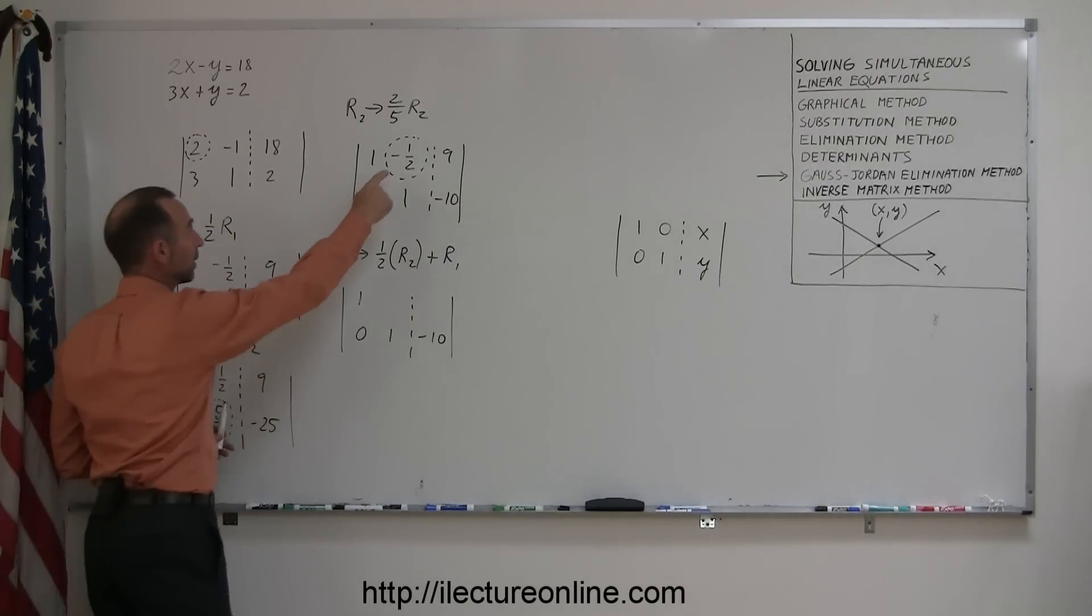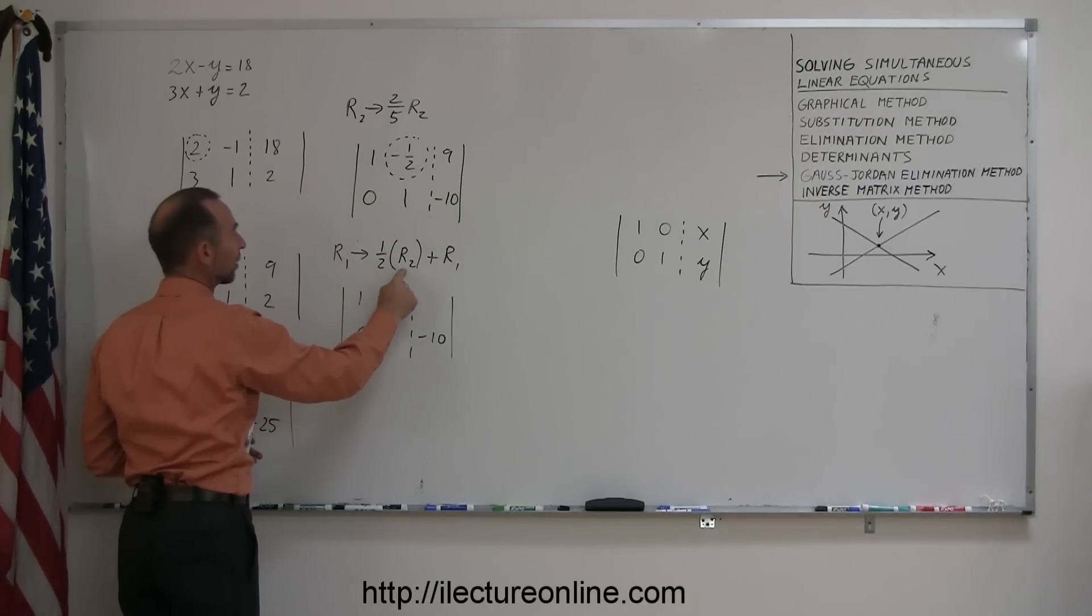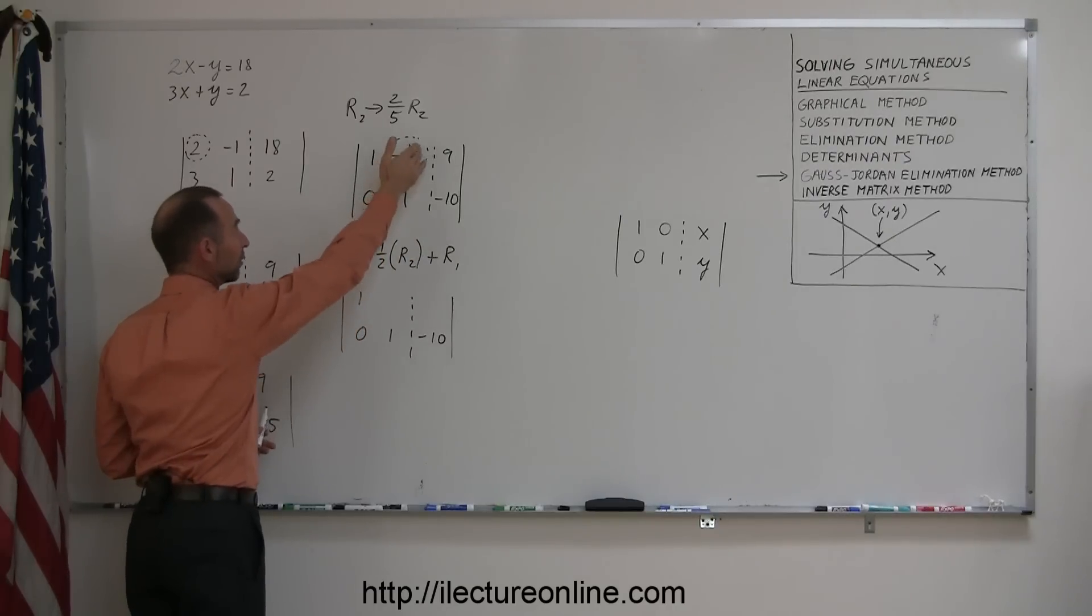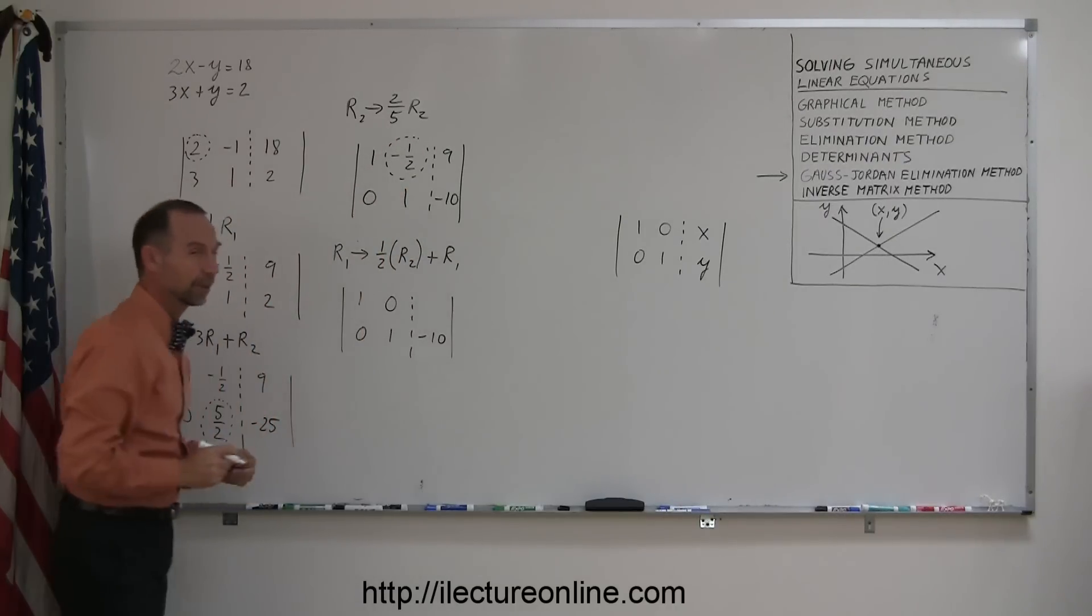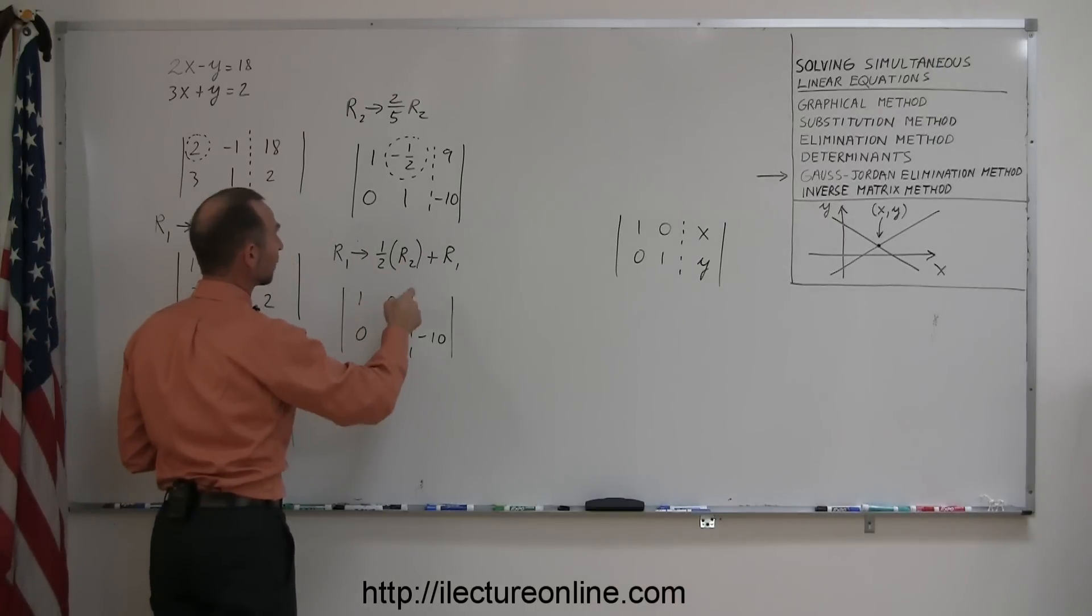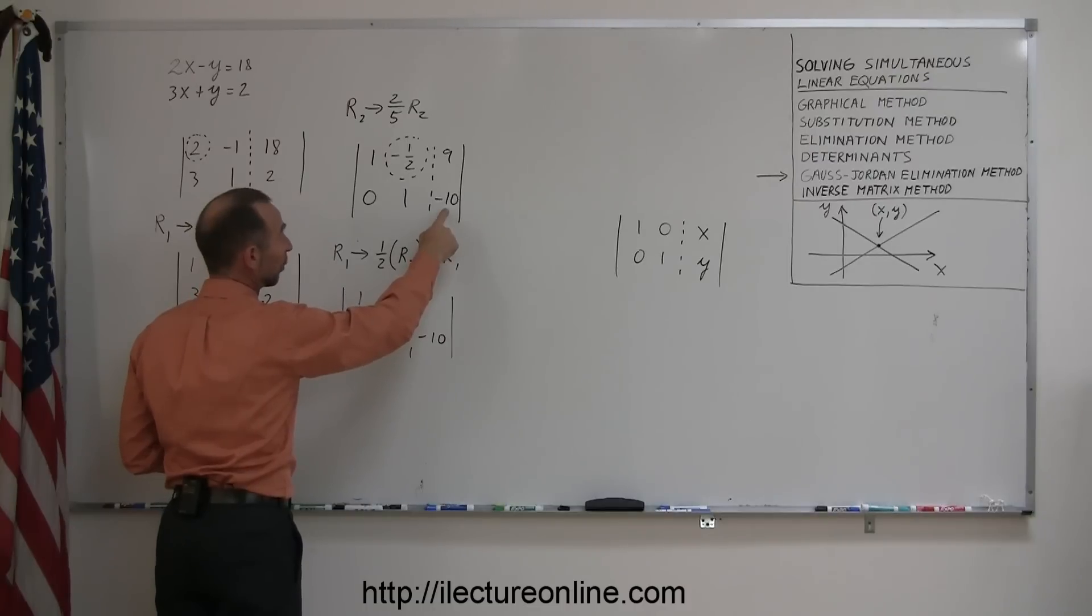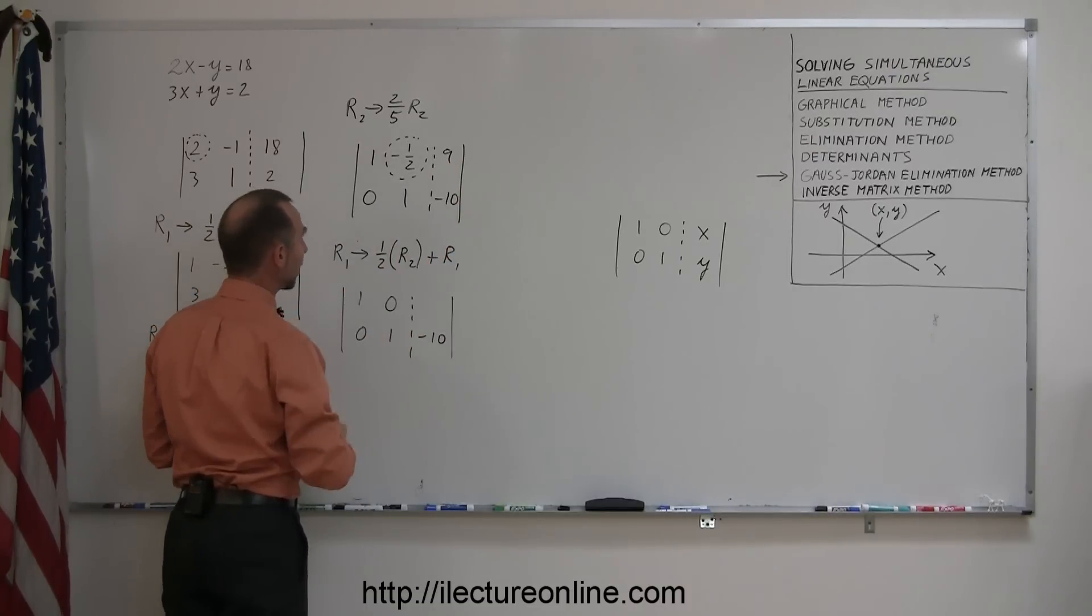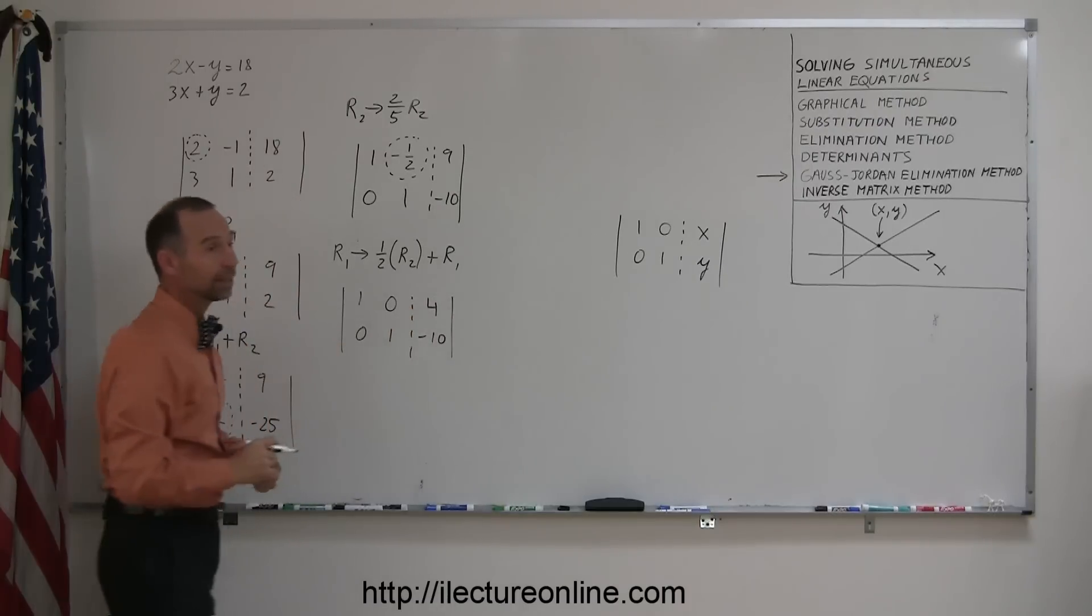But notice for this number right here, if I take 1 half times the second row, which is 1 half times 1, gives me 1 half, I add it to the negative 1 half, that cancels out and gives me 0. Of course, I have to do it to the next column. And so, 1 half times negative 10, that would be minus 5, add it to positive 9, gives me positive 4. And I'm done.